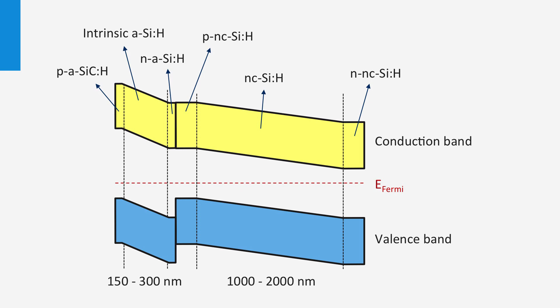The bluish and green light is absorbed in the top cell and excites the mobile electrons and holes. The reddish light is absorbed in the bottom cell, exciting the charge carriers.